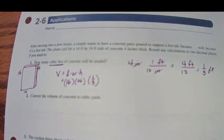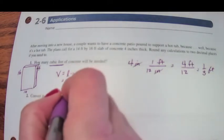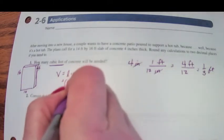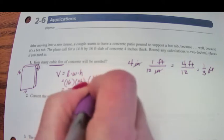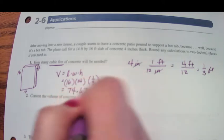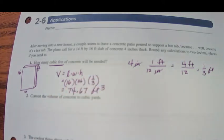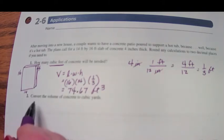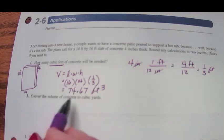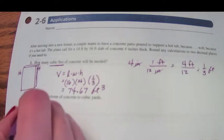14 times 16 times 1 third, when you multiply everything out, that's going to be 74.67 cubic feet. 74.67 cubic feet of concrete. But now the second question says convert the volume to cubic yards.